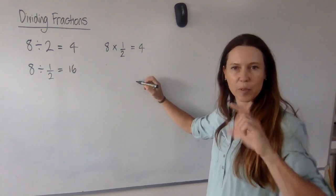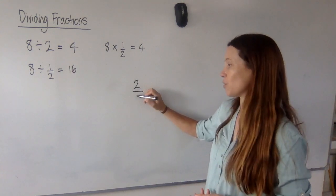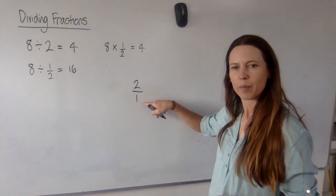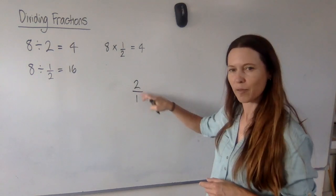Now, a reciprocal is a bit like flipping a number upside down. Now, if I take the number 2 and I call it 2 over something, I need to call it 2 divided by 1 because 2 divided by 1 is still 2, right? It just looks a bit like a fraction now.